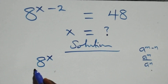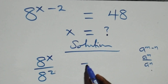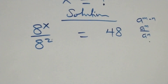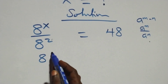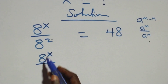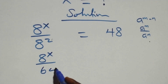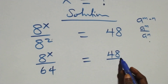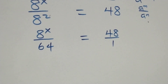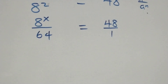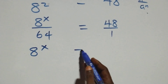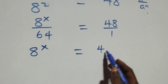We have a raised to power x over 8 squared equals 48. This is the same thing as a raised to power x over 8 squared, and 8 times 8 equals 64. We can write this as 48 over 1, then cross multiply to get a raised to power x equals 48 times 64.